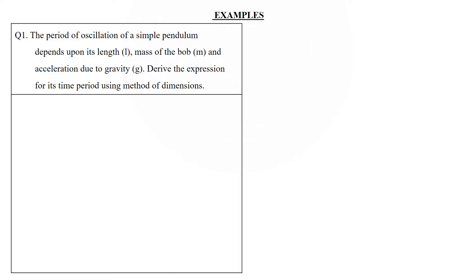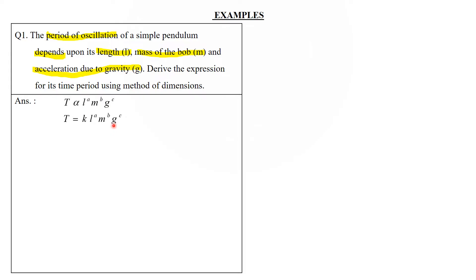First example: the time period of oscillation of a simple pendulum depends on length l, mass m, and acceleration due to gravity g. Step one: T ∝ lᵃ · mᵇ · gᶜ. Step two: T = k · lᵃ · mᵇ · gᶜ. Step three: the dimension of g is [LT⁻²], so substituting dimensions gives [T] = [L]ᵃ [M]ᵇ [LT⁻²]ᶜ.